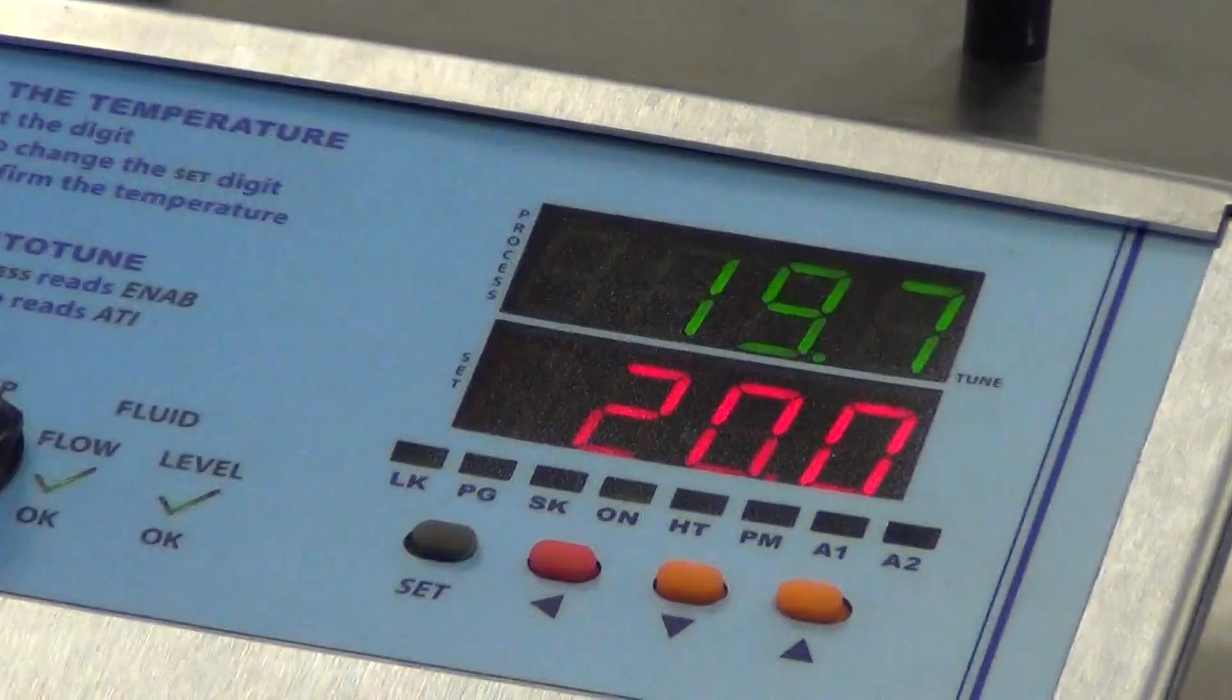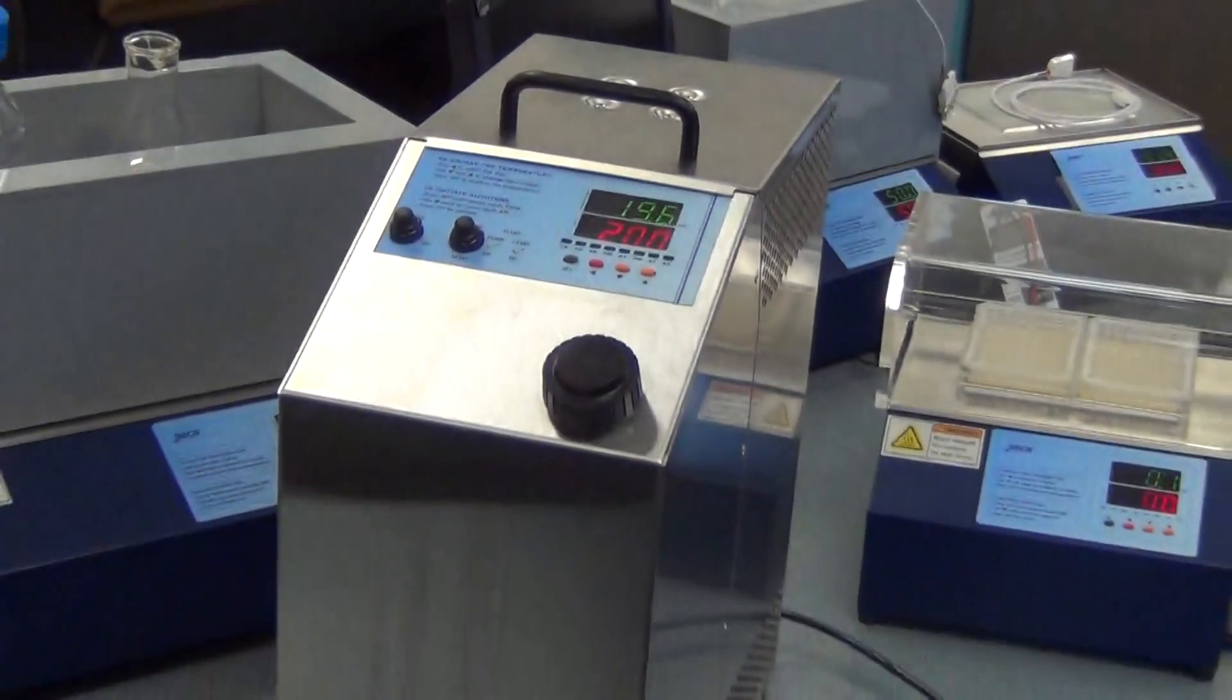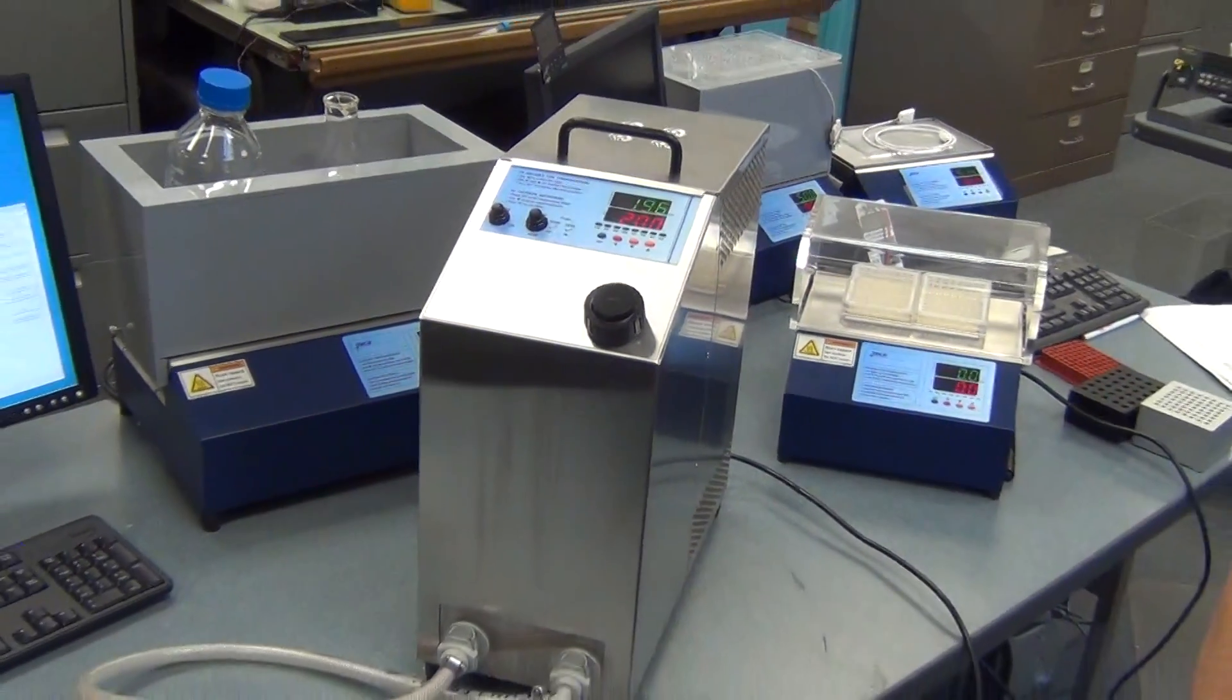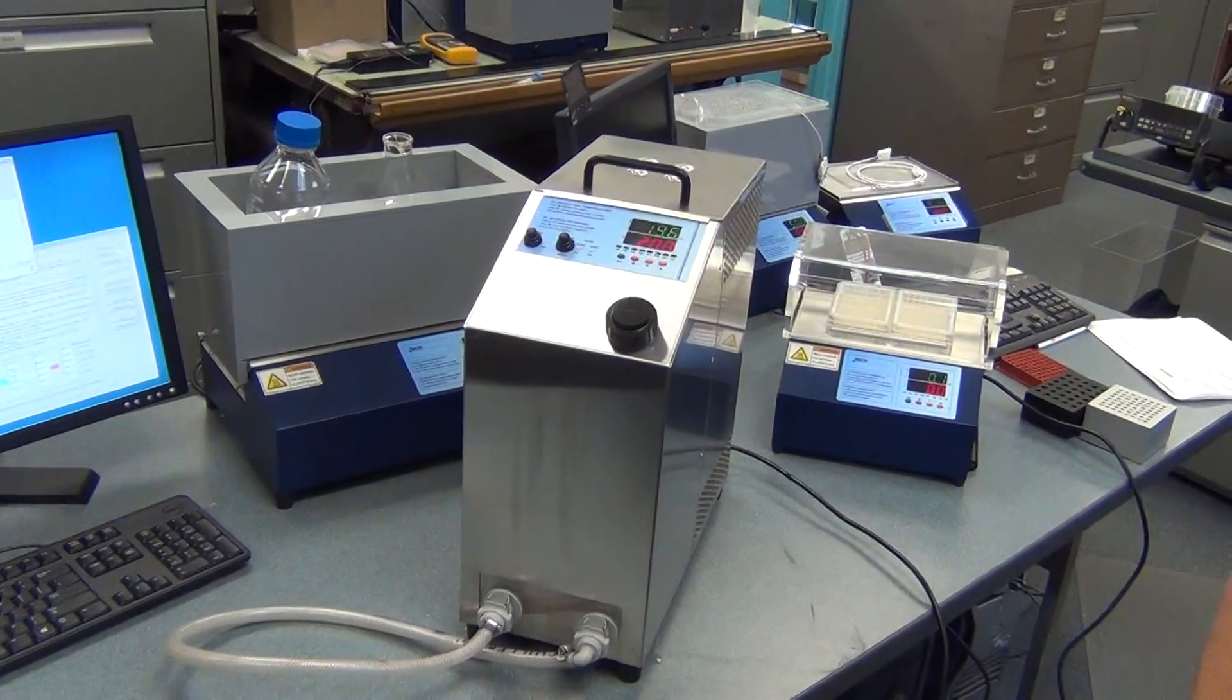There you go. That's your TLC 900 liquid chiller, heating and cooling with PWM temperature control. Thanks for joining us.